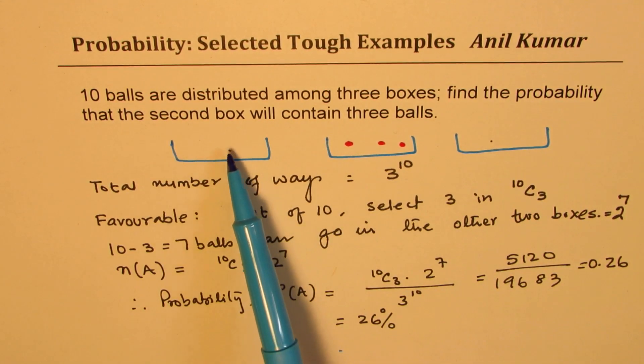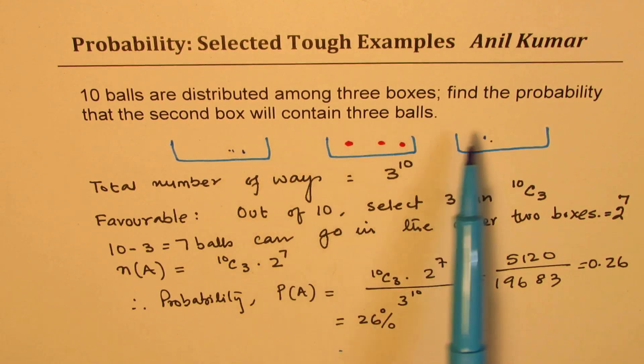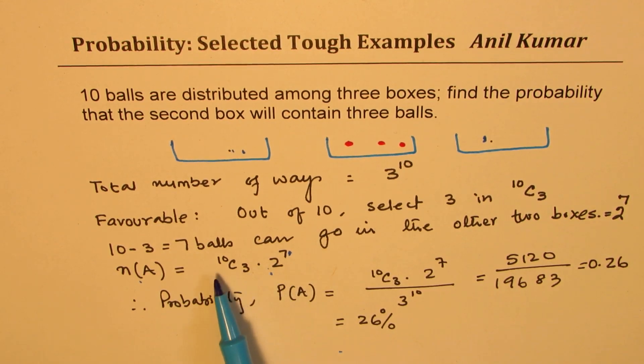When you do that, the other 7 balls could be placed in these two boxes. So, that is 2 to the power of 7. The favorable options for us are the product of these two.